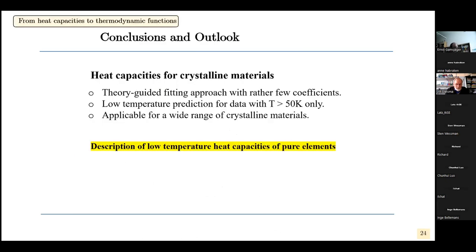This works quite well to approximate heat capacity by these Debye-Einstein functions. To conclude this first part: this was a theory-guided fitting approach with rather few fit coefficients. It is possible to predict heat capacities when we have only experimental data for temperatures higher than 50 K, and it's applicable for a wide range of crystalline materials — essentially when you have no phase transformations in that range.